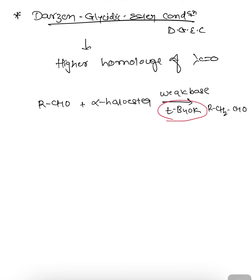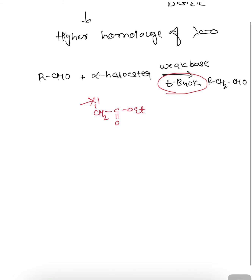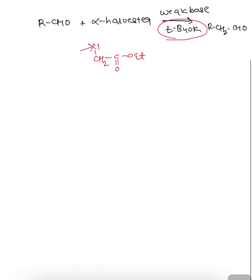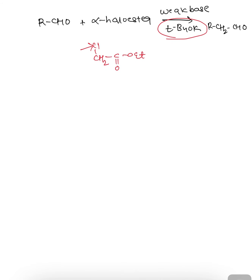If we write alpha halo ester as CH₂Cl-COOEt — if we use a strong base, the Cl⁻ will get replaced and the reaction will follow a different mechanism. So we use a weak and bulky base like tertiary butoxide to avoid that pathway.